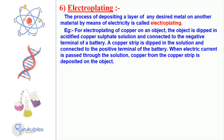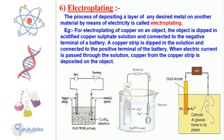Electroplating is a widely used industrial process which utilizes the chemical effects of electric current to apply a layer of metal on another material. The piece of material is connected to the negative terminal of the electric current, whereas the corresponding metal is connected to the positive terminal.